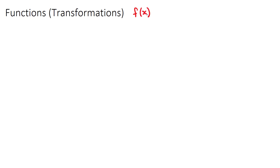In this video we're going to look at functions and transformations of functions. For the sake of this video and the examples we're about to do, I'm going to say that we have some function f(x), and in this function we know a coordinate that our function will pass through — let's say that coordinate is (2, 2). So we know that our function passes through (2, 2), which means f(2) = 2, because when x is 2, y is also 2.